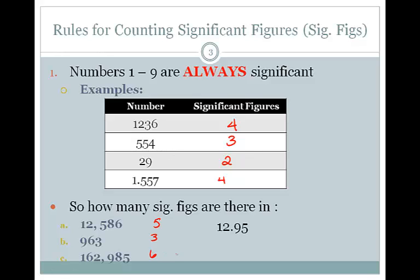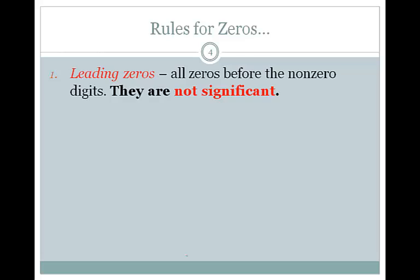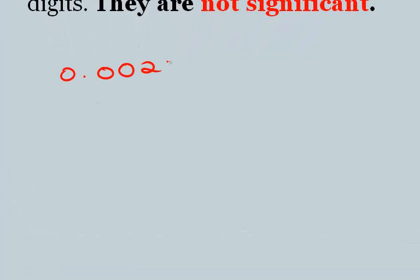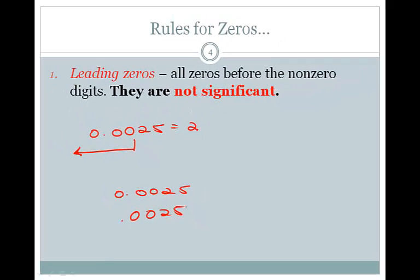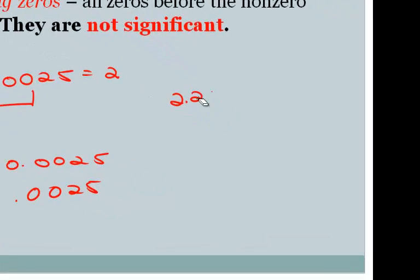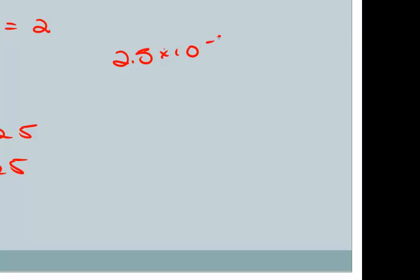Now what about zeros? Our first type of zero is a leading zero. Leading zeros are never significant. So if we take a number like 0.0025, all of these zeros are in front of the first non-zero number, so they are not significant — there are two significant figures. If we were to write this number in scientific notation, we would write 2.5 × 10⁻³. Notice we didn't write any of those zeros because they're not significant.